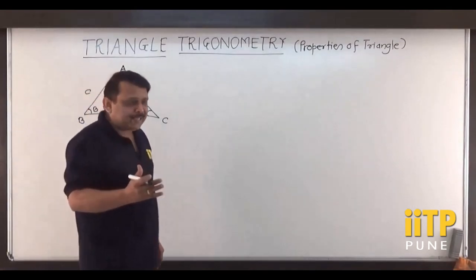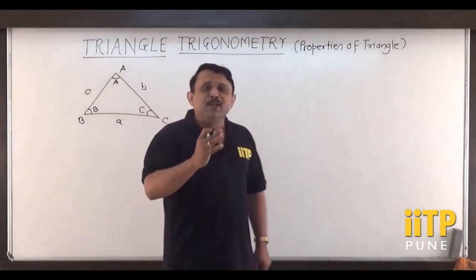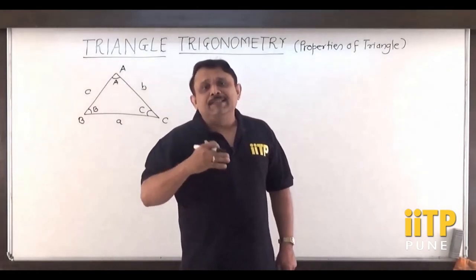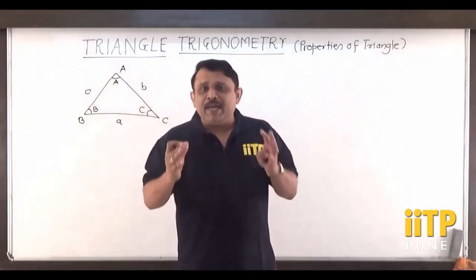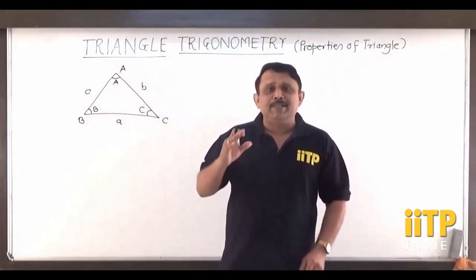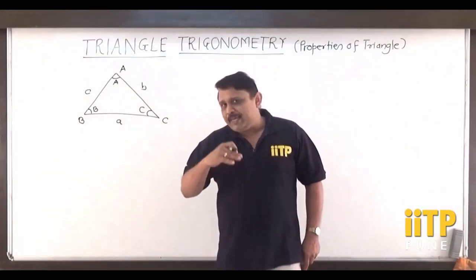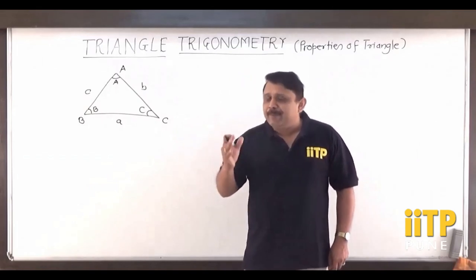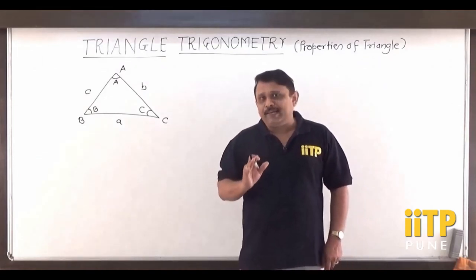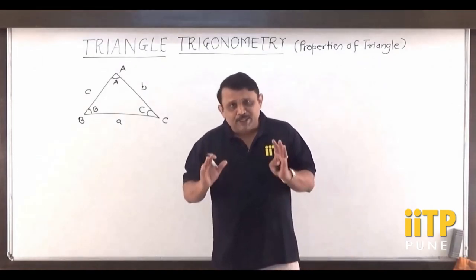In all other cases, we know the triangle completely. That is, if any 3 elements of the 6 elements are known, we can find the remaining three elements of the triangle completely.